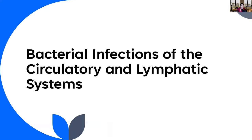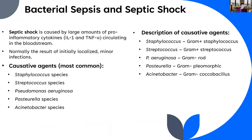We're going to start with bacterial infections of these two systems, beginning with bacterial sepsis and septic shock. Bacterial sepsis refers to the presence of bacterial pathogens at relatively high levels in the bloodstream — they're not just passing through; they're living there, dividing, and causing issues.